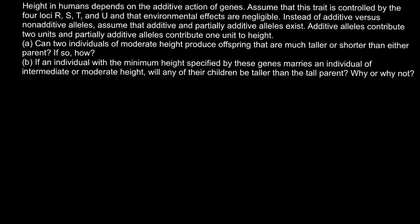We are given four loci: R, S, T, and U. Humans are diploid, so for each locus we have two alleles. Now imagine that we have a situation where both parents belong to one genotype. The genotype would be capital R, small r, capital S, small s, capital T, small t, and capital U, small u. This is going to be the genotype of the father, for example.